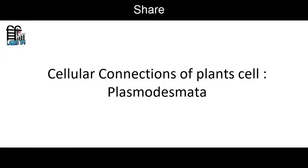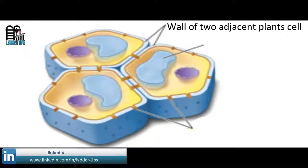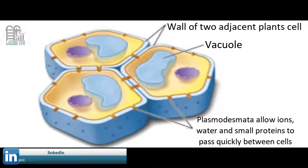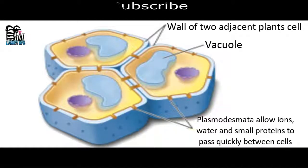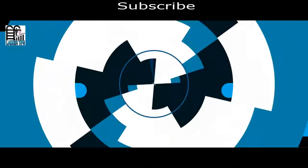Cellular connections of Plasmodesmata. Walls of two adjacent plant cells and vacuole — Plasmodesmata allow ions, water, and small proteins to pass quickly between cells. Many plant cells are linked by Plasmodesmata.